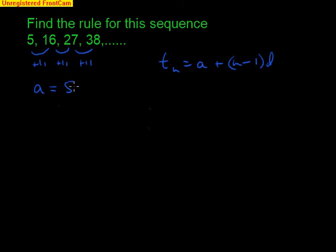a is the first term which is clearly 5. d is the common difference which is plus 11. And so we can write down that the nth term tn is equal to a which is 5 plus n minus 1 times 11.